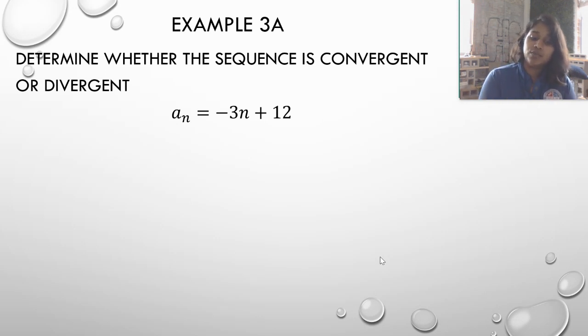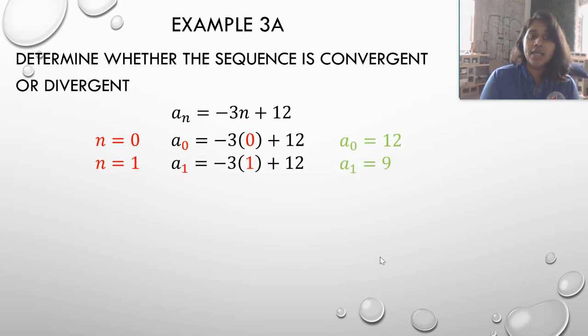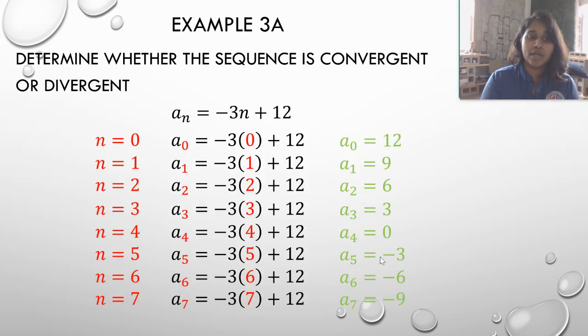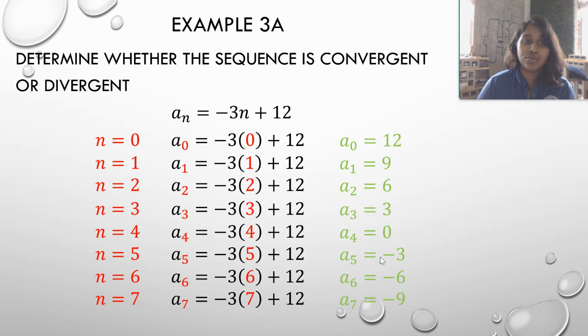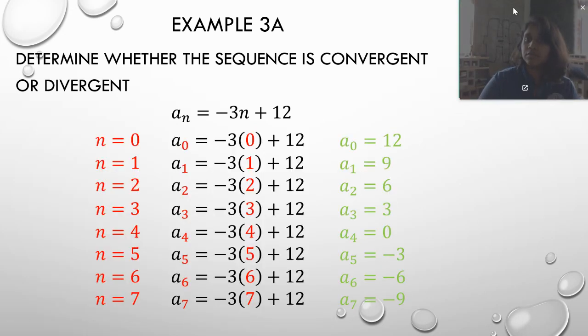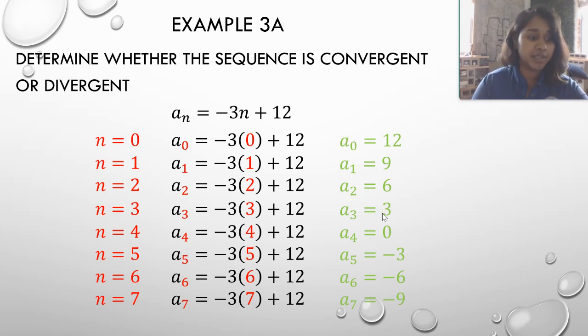The first thing I would do is plug in those numbers and figure out a plot point, graph it out, visualize it for myself. So I plug in N equals 0, 1, 2, 3, 4, and I plug it all the way in to N sub 7. So I know my 0th term, I know my 1st term, my 2nd term, my 3rd term, 4th, 5th, 6th, 7th, and so on.